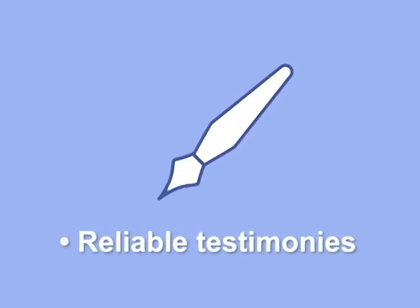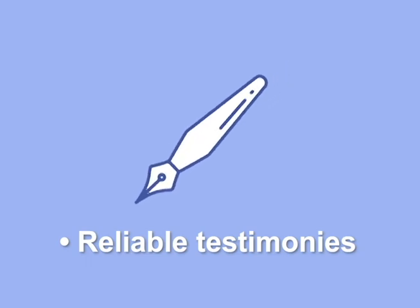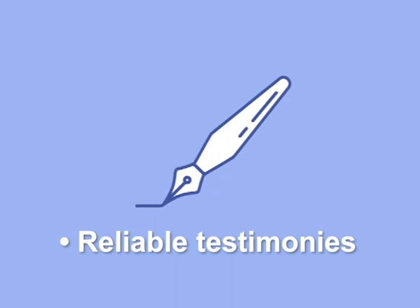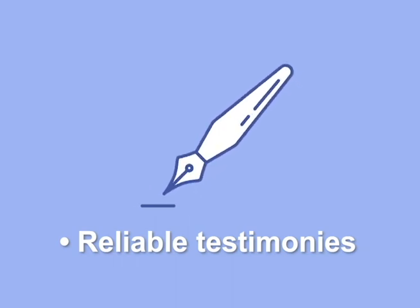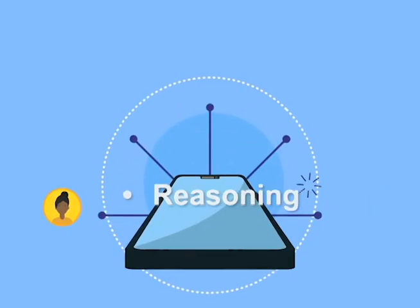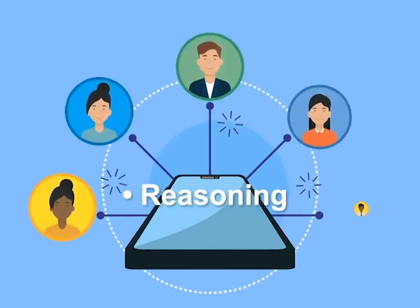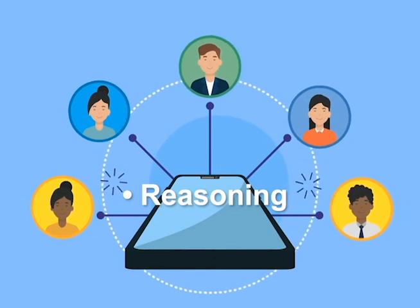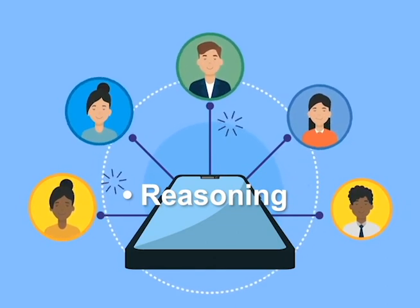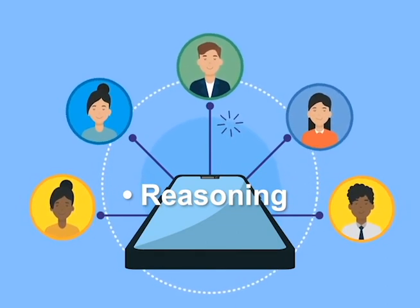Reliable testimonies, which are taken from people who have personally observed an event or a person mentioned in the information shared. And lastly, reasoning, which looks at how the information was shared. It involves digging deeper into the information shared and applying a bit of logic. Let's look at a few ways we can use reasoning to separate facts from opinions.